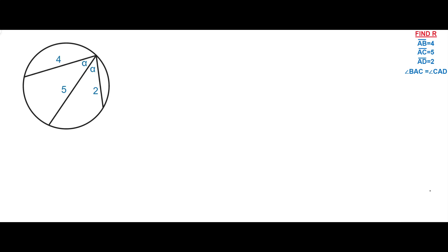Welcome to Geometry Masterclass. In this video, we have a circle and two congruent inscribed angles that have a common side. The sides of the inscribed angles are 4, 5, and 2 respectively. The task is to find the radius of this circle or the circumradius.